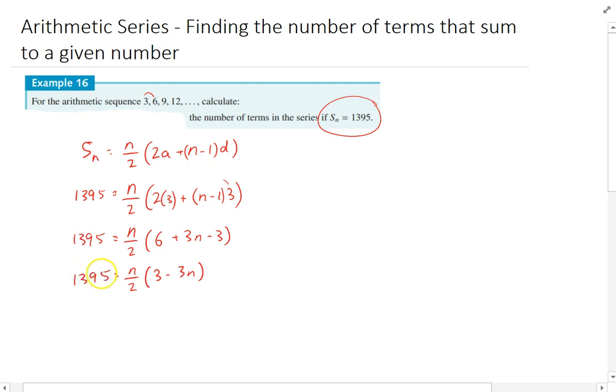All right, so now we just need to solve this thing for n. I can multiply both sides by 2 to get rid of that 2 there, so that'll give me n times 3 minus 3n equals whatever this is multiplied by 2, which is 2790.